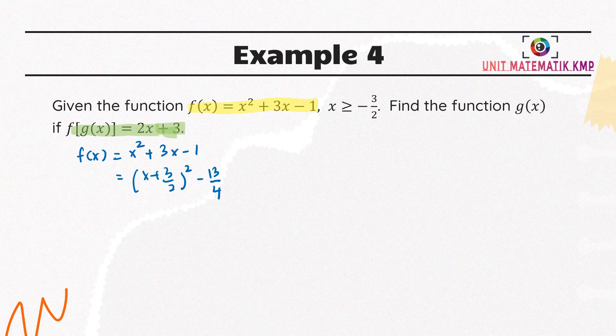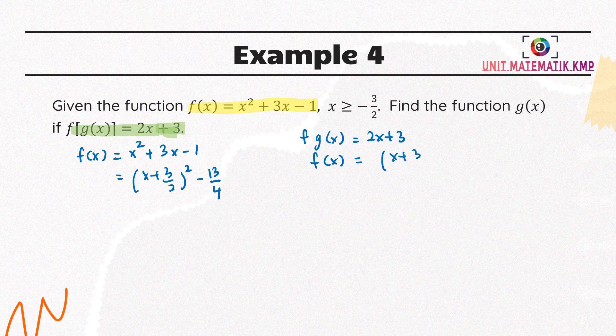Now let's proceed with the solution for fg(x) equals 2x plus 3. The function f is given as (x plus 3 over 2) squared minus 13 over 4. We can compare these two functions — both are actually from function f — so we can substitute g(x) into x.